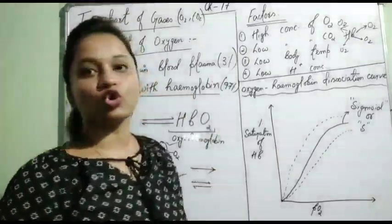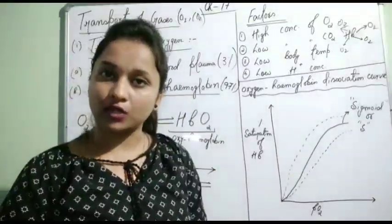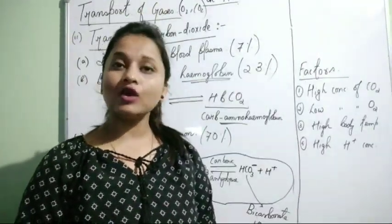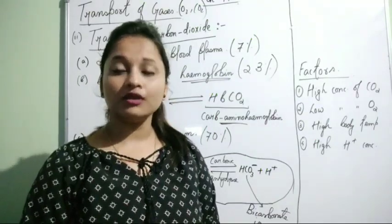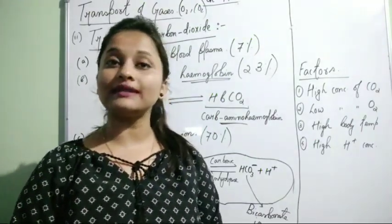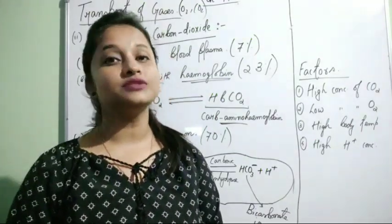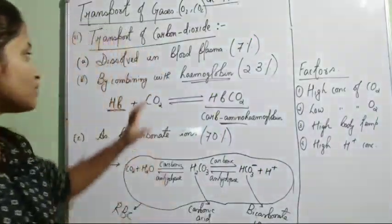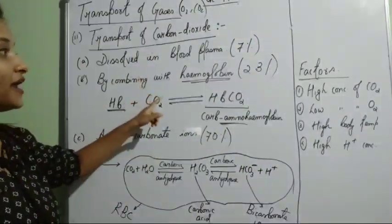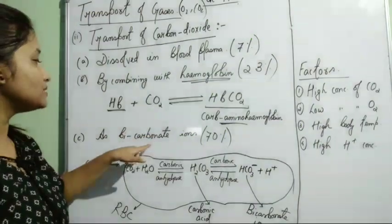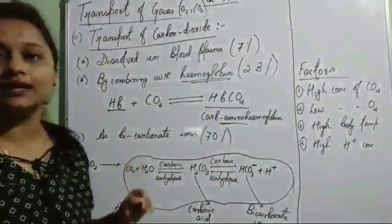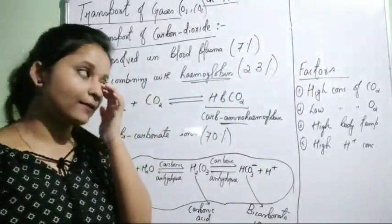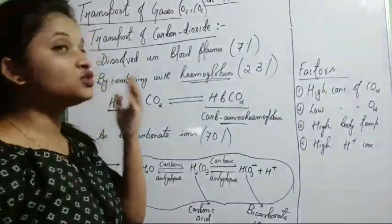Now let us see transport of carbon dioxide. Unlike oxygen, carbon dioxide is transported in three ways: by dissolving in blood plasma, by combining with hemoglobin, and as bicarbonate ions. Oxygen is transported in two ways, but carbon dioxide is transported in three ways.